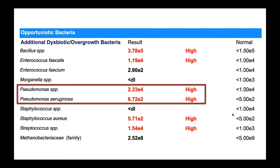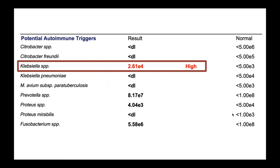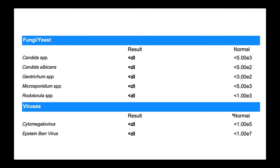In the opportunistic bacteria section, a number of them are elevated — typical of what we consider an overgrowth pattern often related to reduced digestive capacity. Many of these are known to be especially prevalent in the small intestine, such as Pseudomonas, which has a lot of new research indicating it can cause inflammation in the duodenum and predispose to food sensitivities in general and gluten sensitivity in particular. This patient's main complaint of food sensitivities may be quite relevant here. Klebsiella is also present and generally tends to be inflammatory as one of the species that can produce LPS. No fungi, yeast, viruses, or parasites were detected.